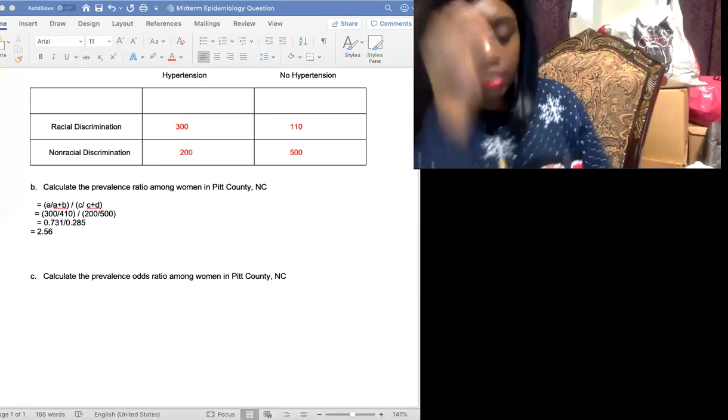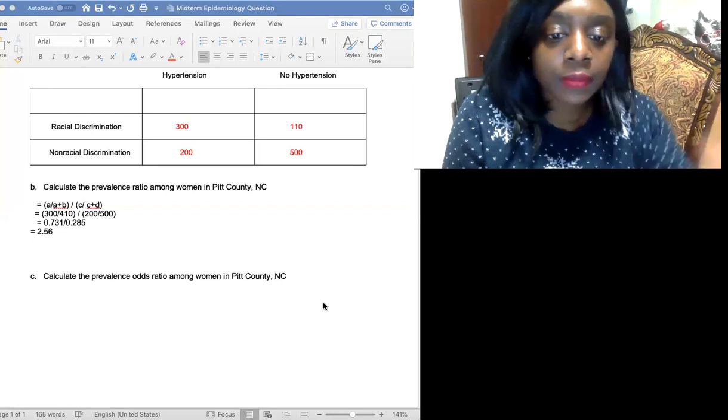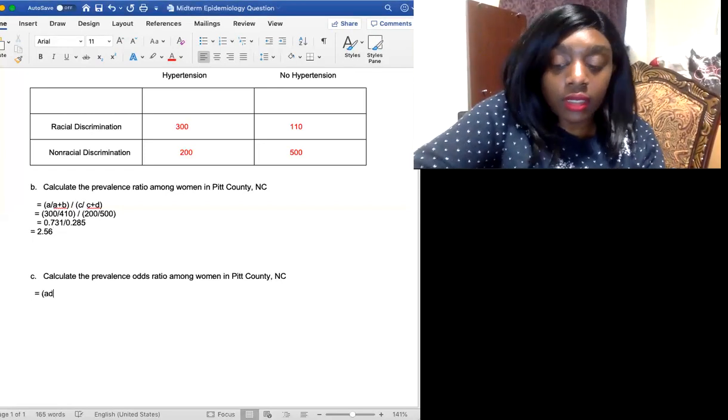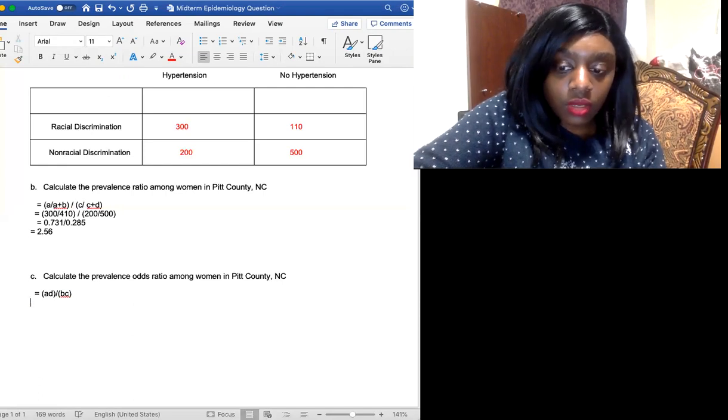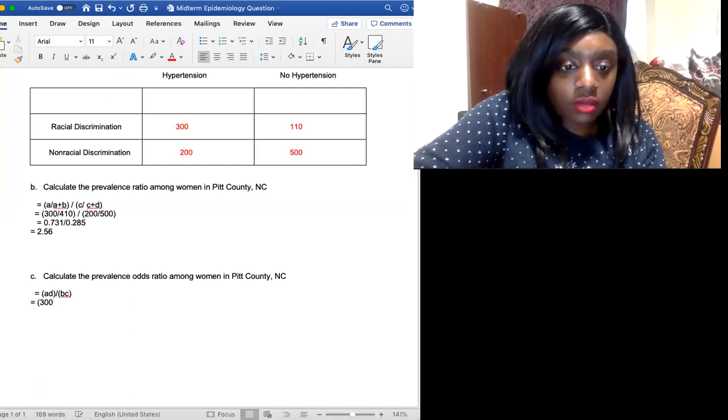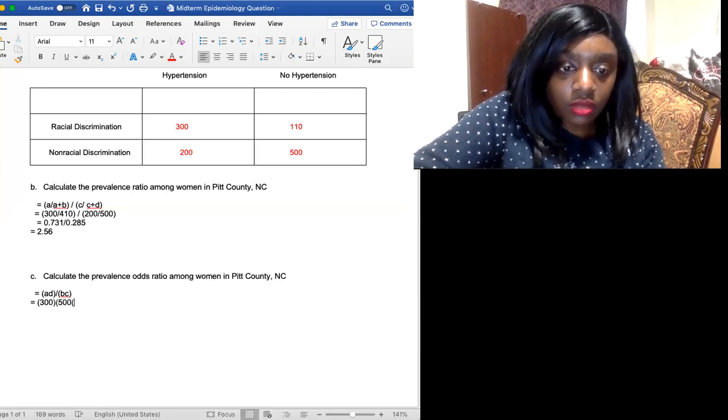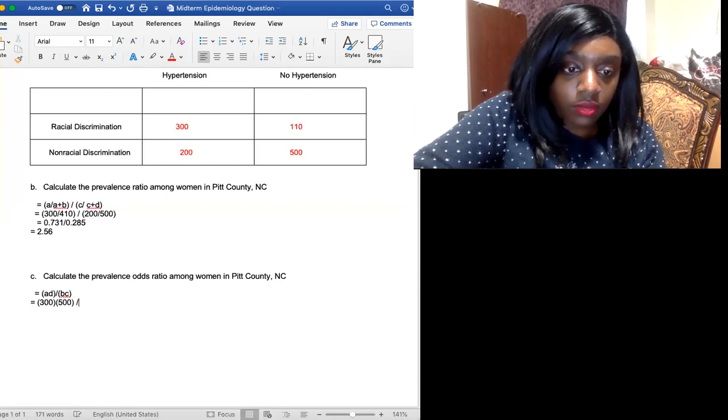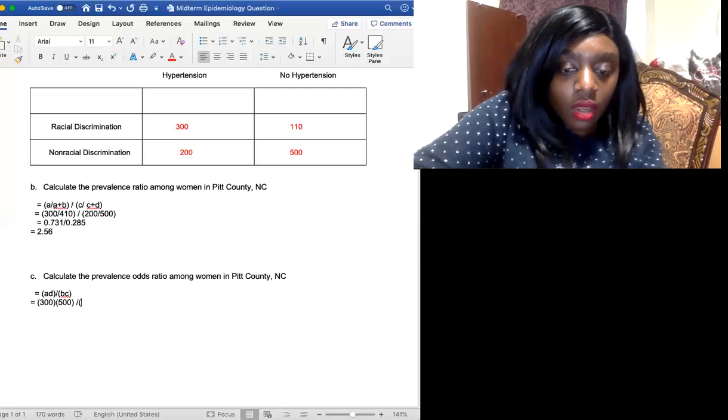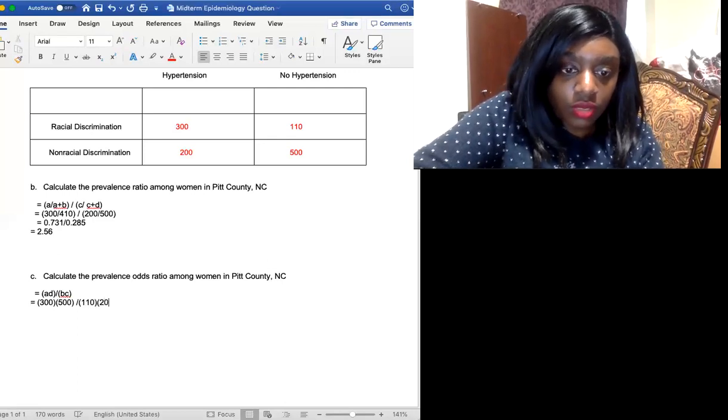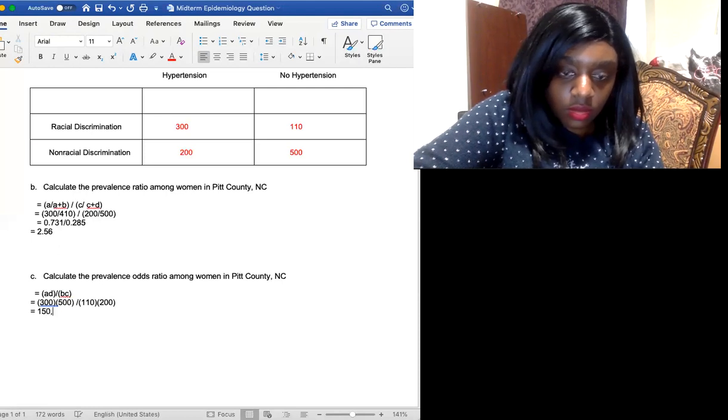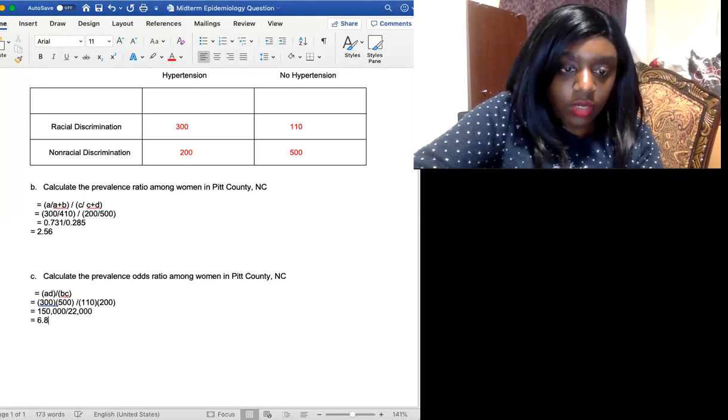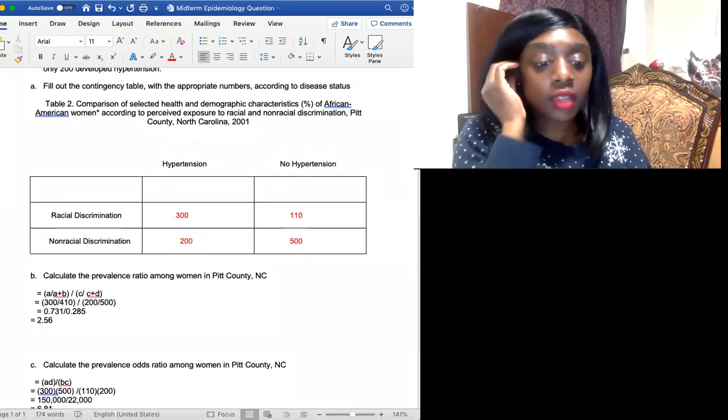Now we're going to do the same calculations on here for you all to see. So the odds ratio is AD divided by BC. And that will give us 300 times 500 divided by 110 times 200. And then that will give us the numbers. So there you have it for the equation and also the calculations.